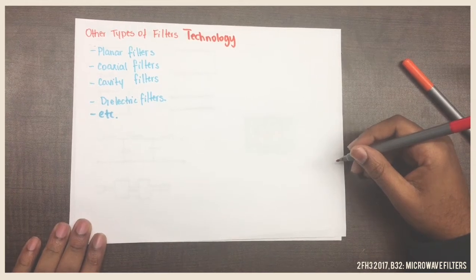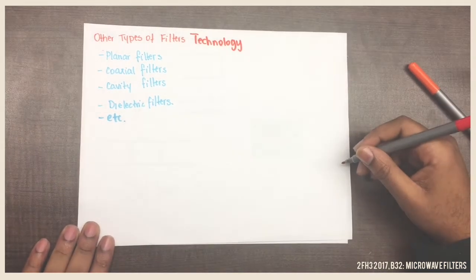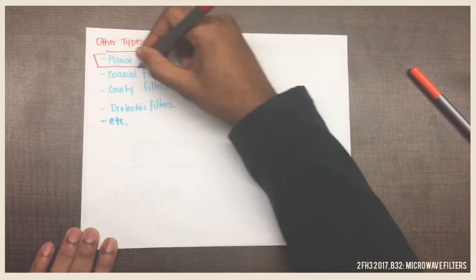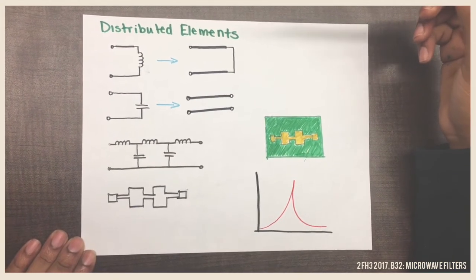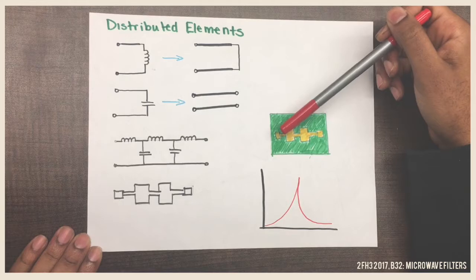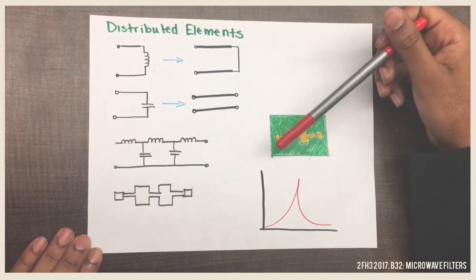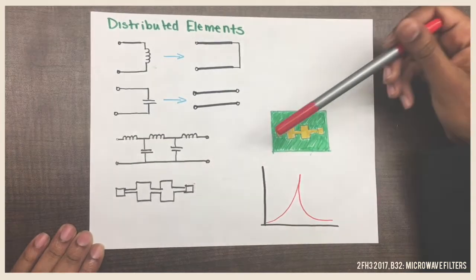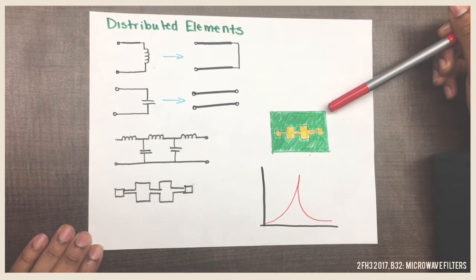There are other filter technologies to overcome these disadvantages, including planar, coaxial, cavity, dielectric, and more. Most microwave filters are planar, which we'll be focusing on. Planar filters are made from distributed elements instead of lumped elements. Conductors can be made from two microstrips short-circuited, and a capacitor can be made from parallel microstrips — their length determines the component parameters. These are produced similarly to printed circuit boards, work at higher frequencies, and have a high Q factor.